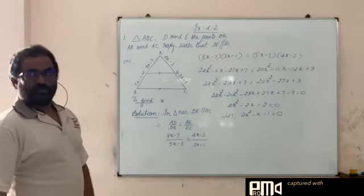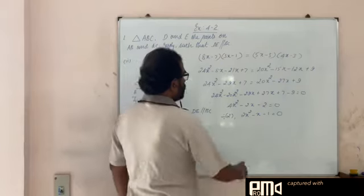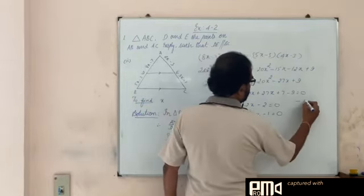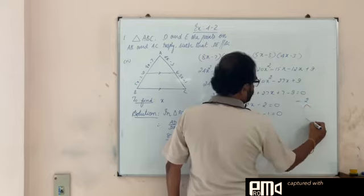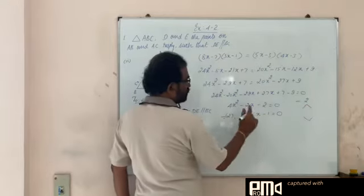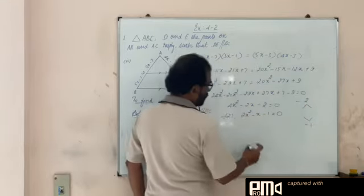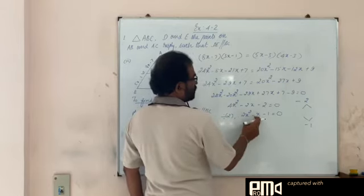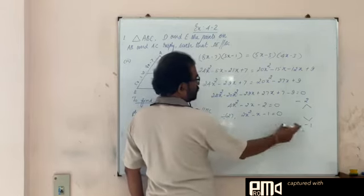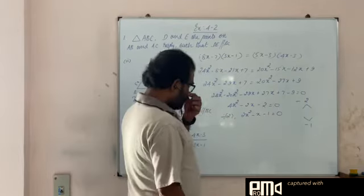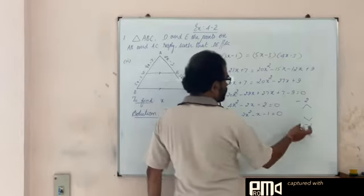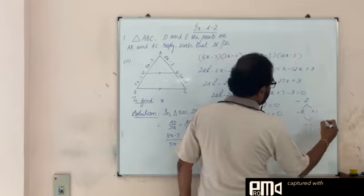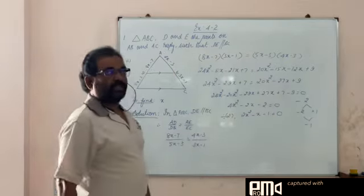Now we have to go for factorization. Product of the factors must be 2 into minus 1, which is minus 2. Sum of the factors is minus 1. The coefficient of x is minus 1. One of the factors which satisfies simultaneously both these conditions: we have minus 2 and plus 1.